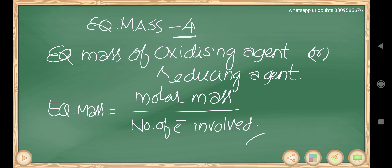Equivalent mass of oxidizing agents and reducing agents can be calculated using a simple formula: equivalent mass equals molar mass divided by the number of electrons involved in that particular change.